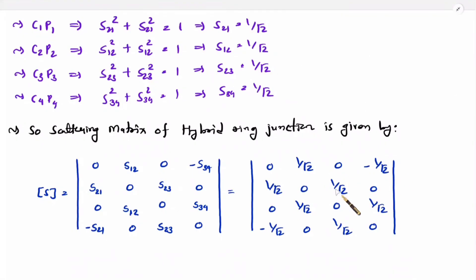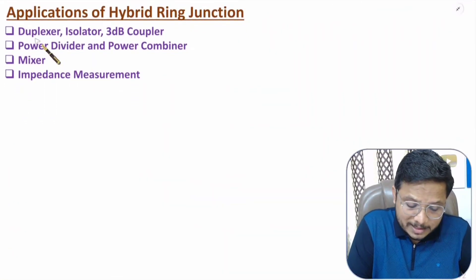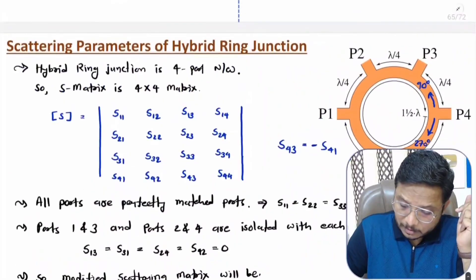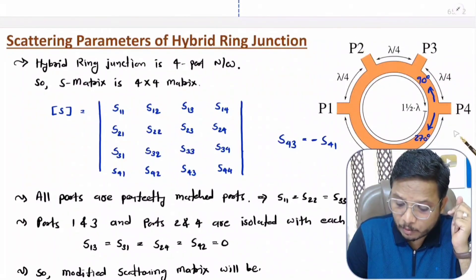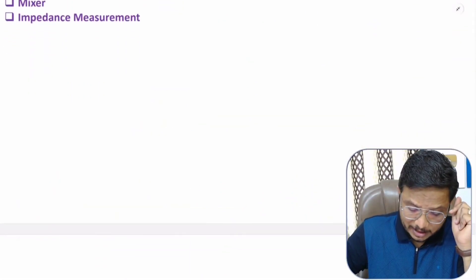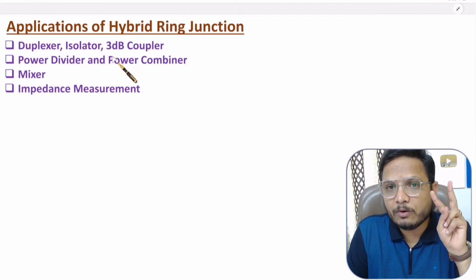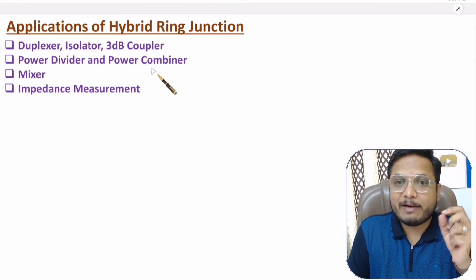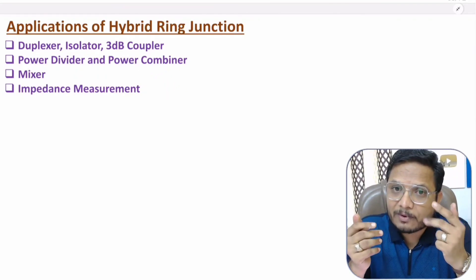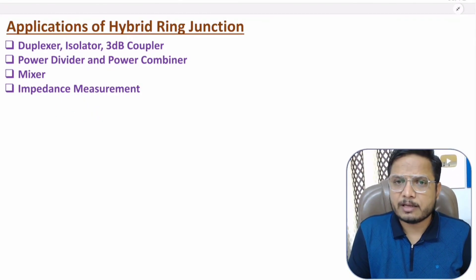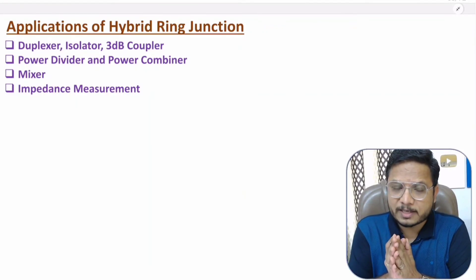Using this scattering matrix, the hybrid ring junction has many applications in microwave engineering: it can be used as a duplexer, as an isolator (since port 1 & 3 and port 2 & 4 are isolated), as a 3 dB coupler with equal power division, as a power divider and power combiner, for addition and subtraction of signals, as a mixer, and for impedance measurement. I hope you enjoyed this session — if you have any questions, note them in the comment section. Thank you for watching.